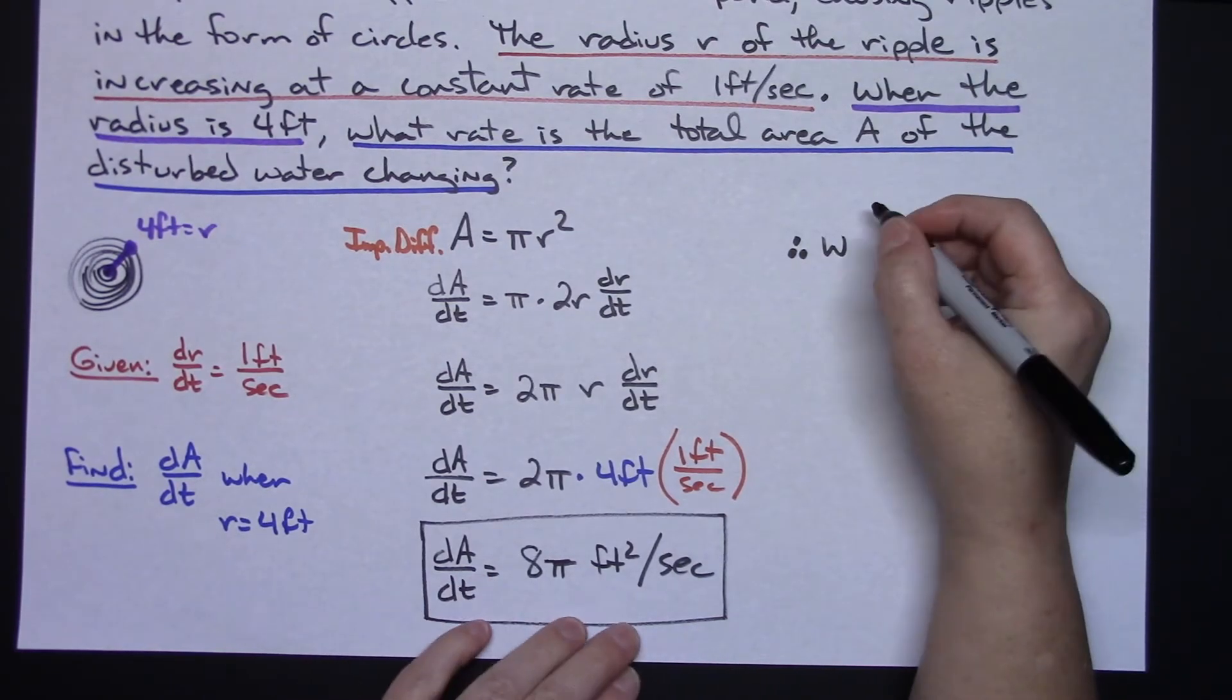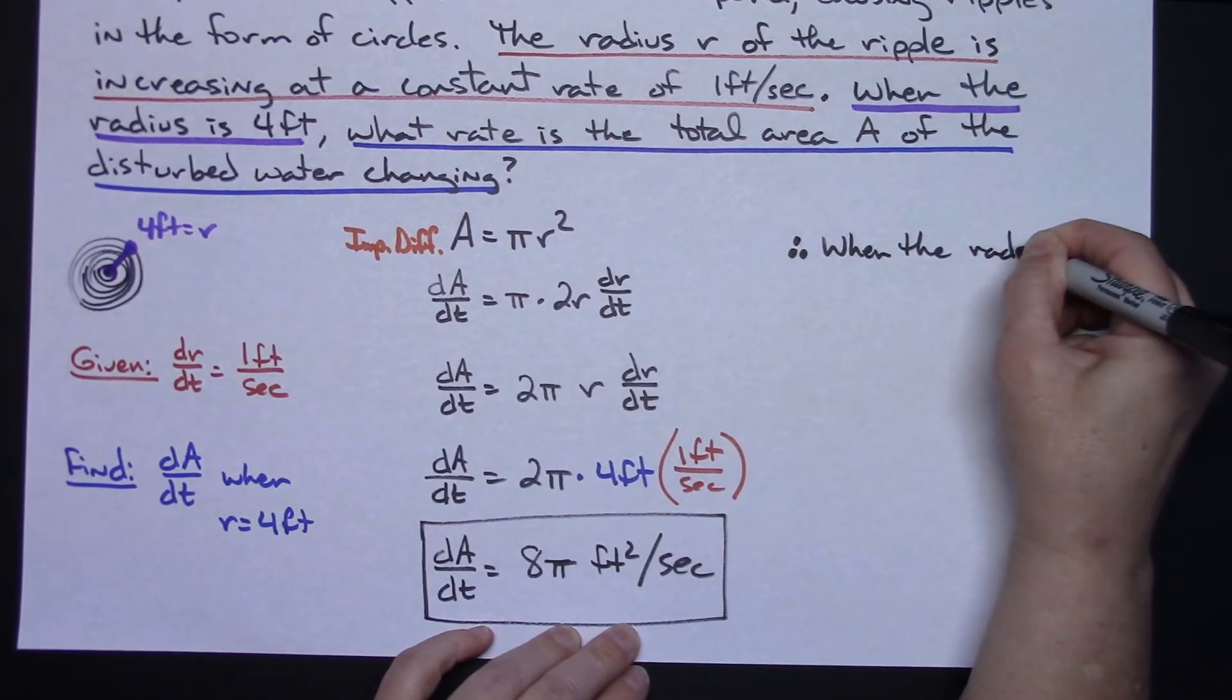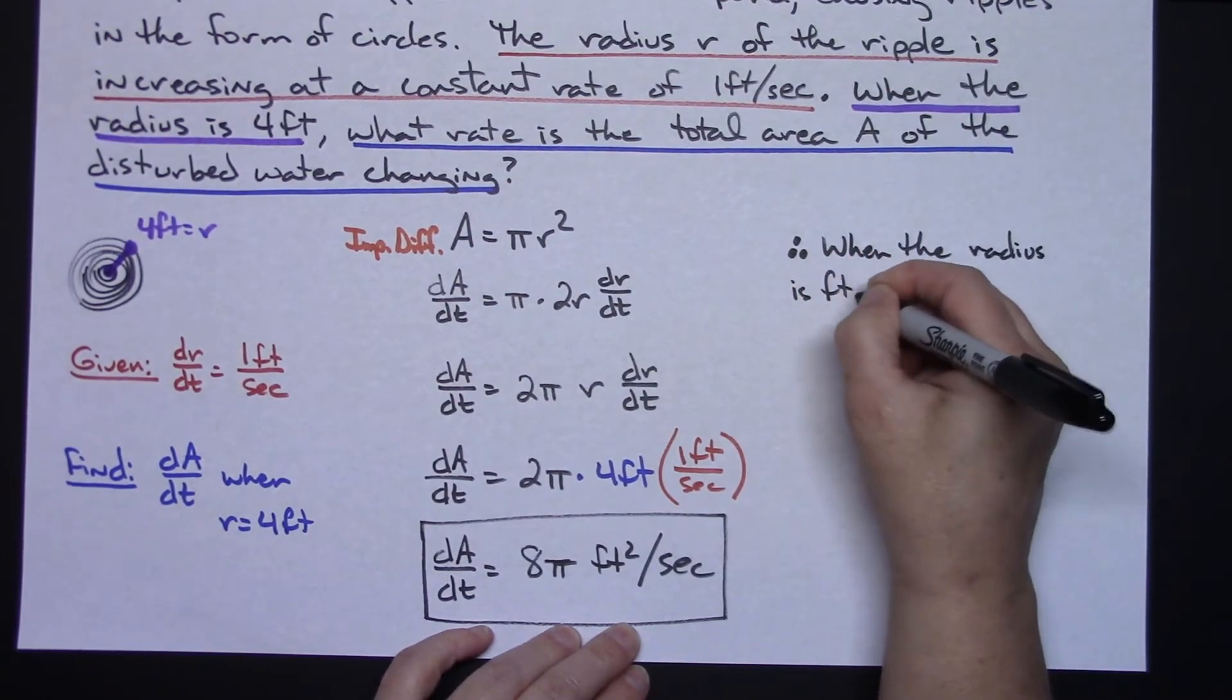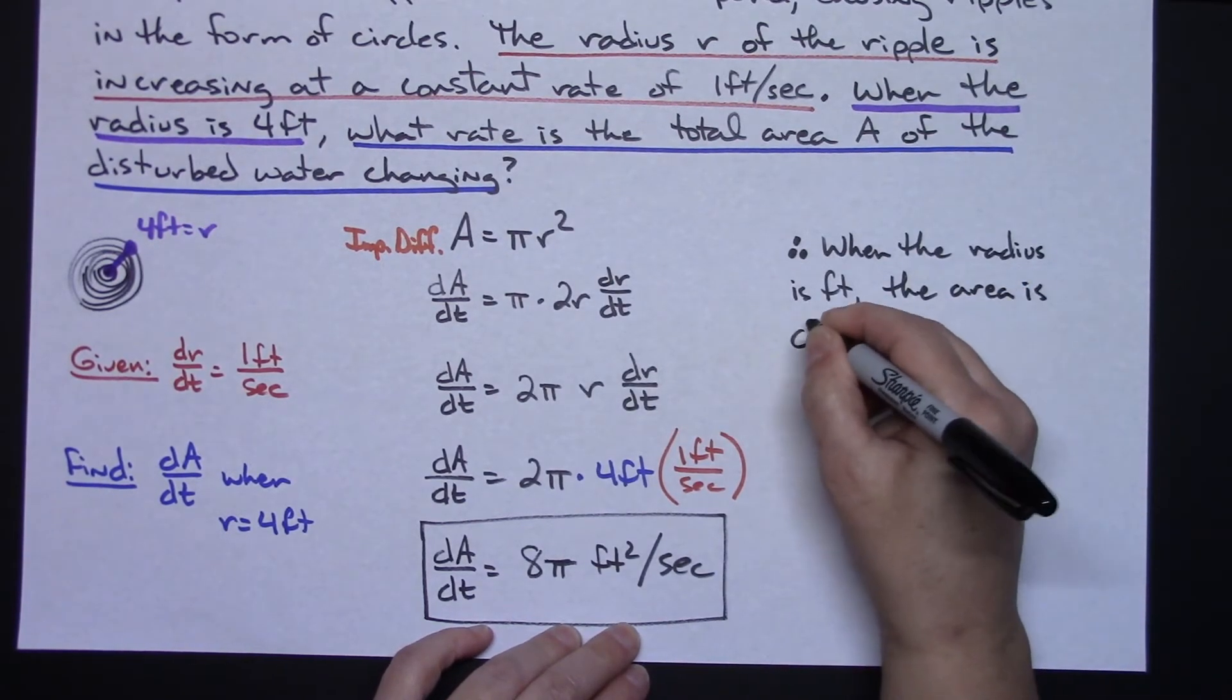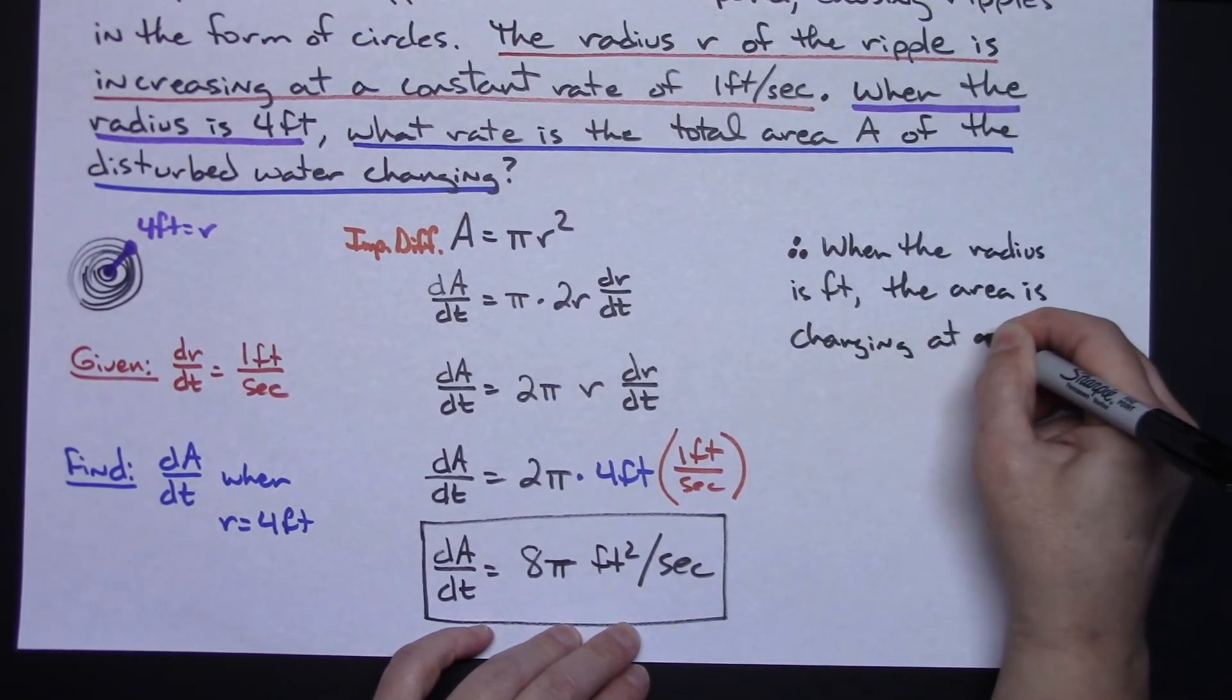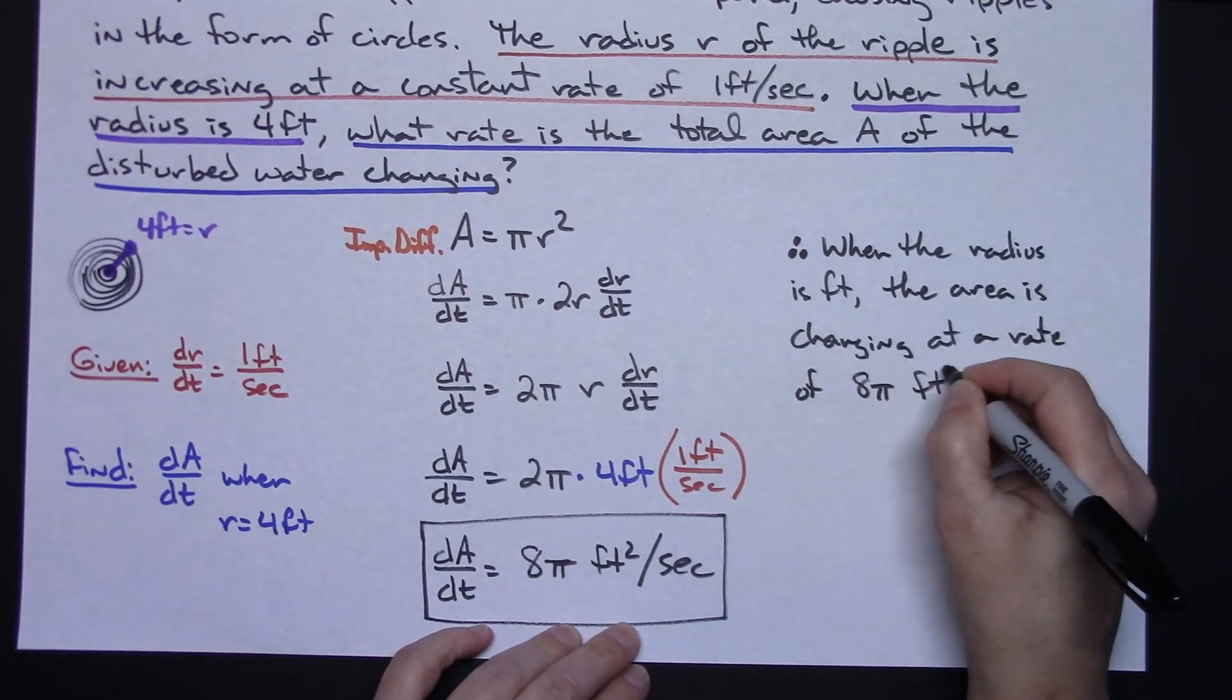This is the rate the area is changing of that disturbed water. So when the radius is 4 feet the area is changing at a rate of 8 pi feet squared per second.